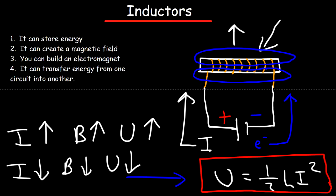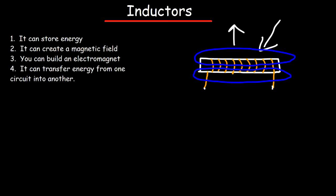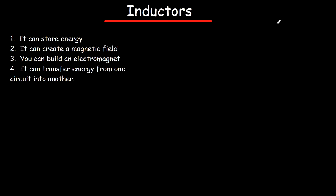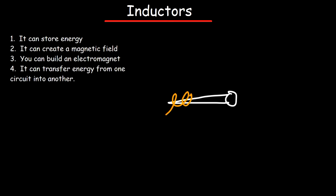Now let's talk about what you can do with an inductor. One thing you can do is build an electromagnet using a coil of wire. The simplest thing is to take a screw. If you find a screw in your house and wrap a coil of wire around it, you can create an electromagnet.